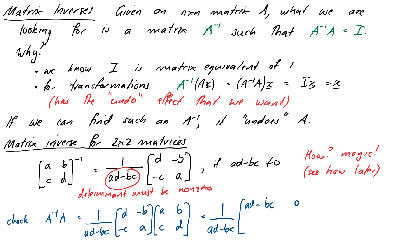Then I get db - bd that's just 0 in the 1,2 position. Then I get negative ca plus ac, that just gives me 0 in the row 2 column 1. And then in the row 2 column 2 I get negative bc plus ad that's just that number ad - bc again. Then you can see that's just the determinant on the diagonals there so that comes out to be our identity [1, 0; 0, 1].